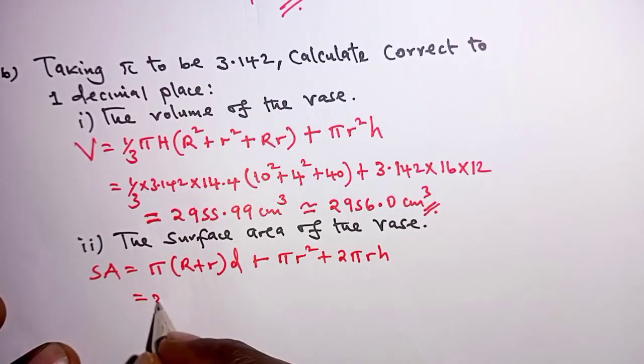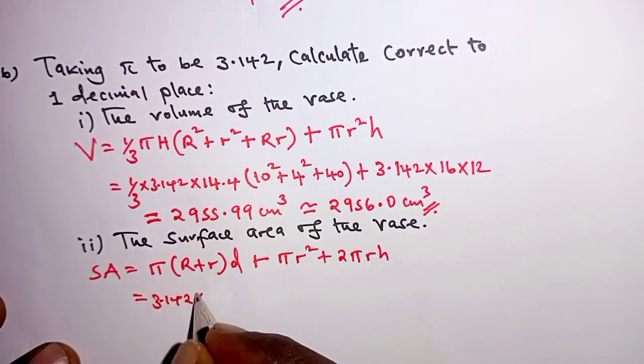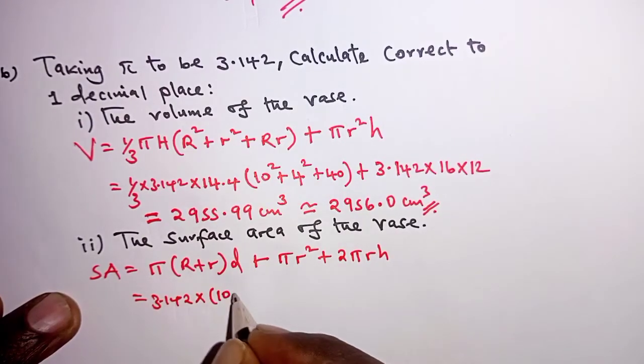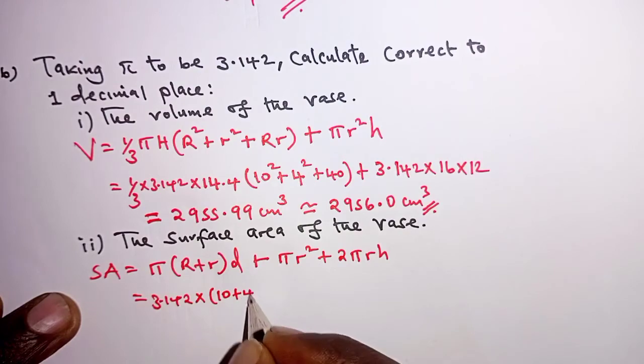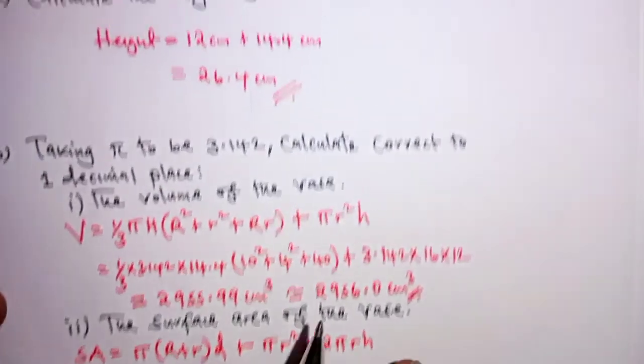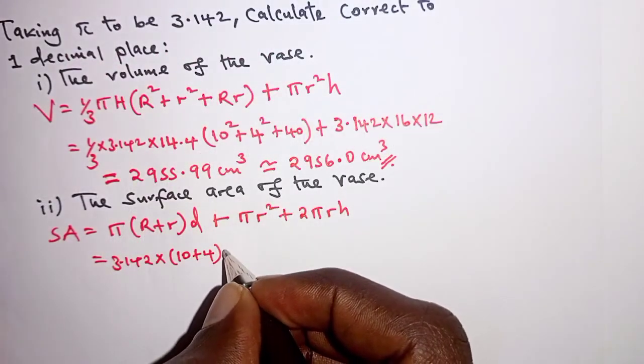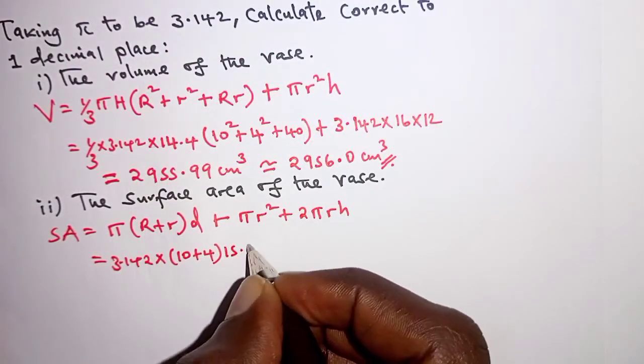doing our substitutions, pi is 3.142 times r we had as 10, and this other r is 4, and then the slant height, we have here as 15.6 centimeters,